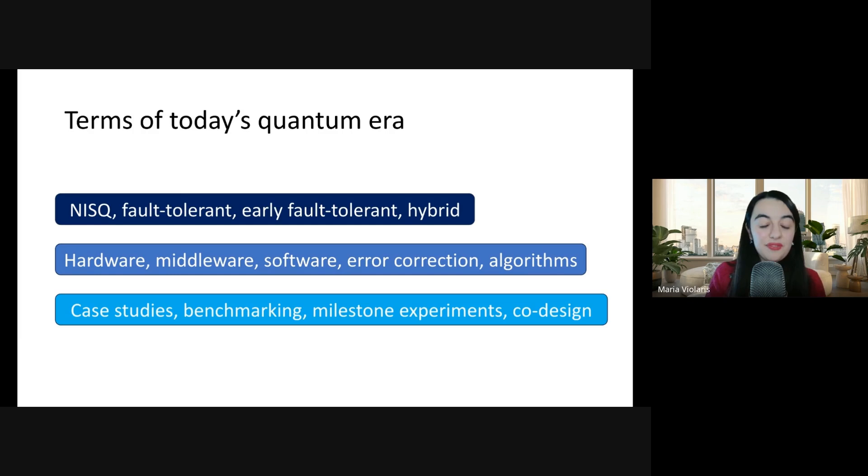Finally, I've just got a few of the types of things that people in the field are working on right now. So one is doing case studies. This is taking promising algorithms and then trying to see what's an example of running the algorithm that we could do on today's quantum computers.